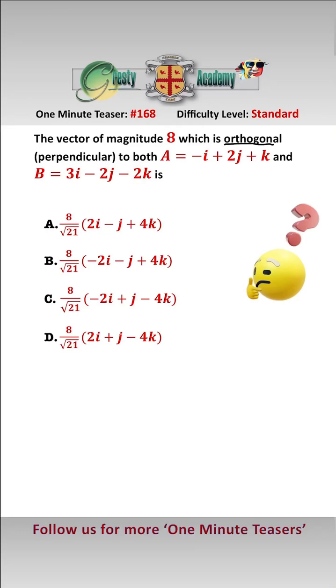So to find the vector which is orthogonal to A and B, we need to look at the cross product A cross B. So let's have a quick look at that: i, j, k; minus one, two, one; three, minus two, minus two.